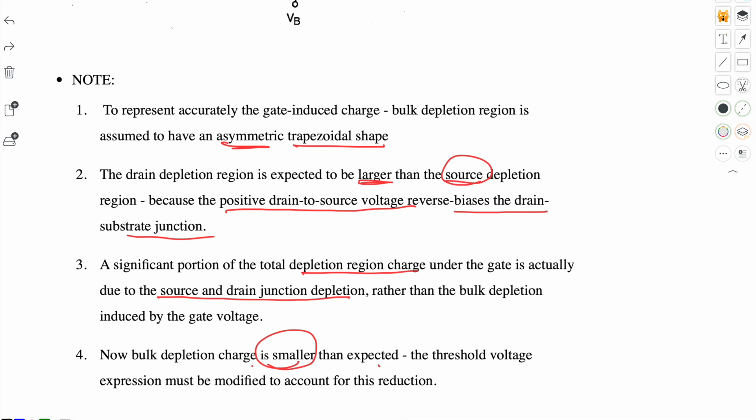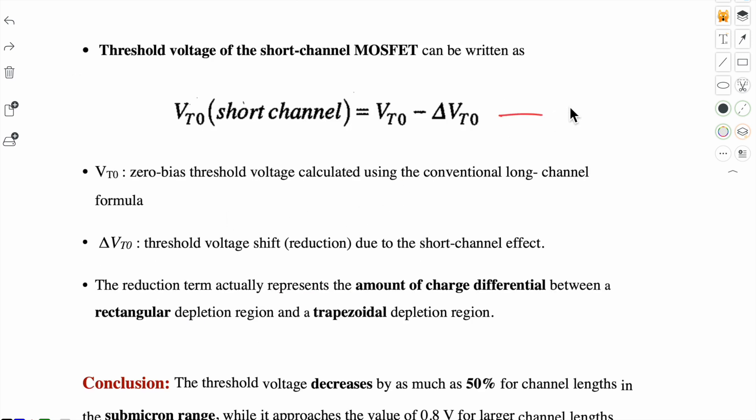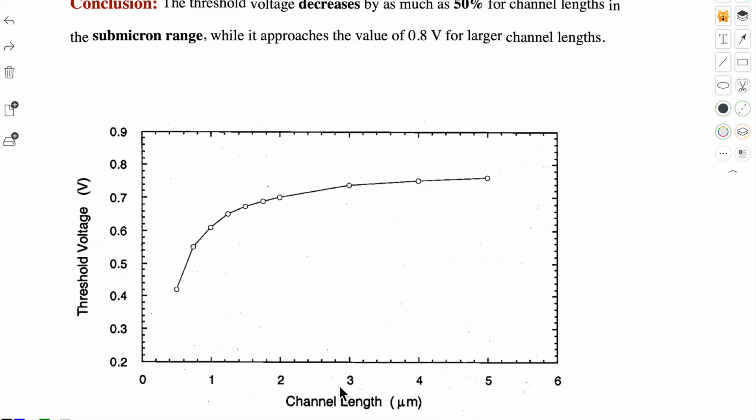So there will be many changes. This is the threshold voltage expression for short channel device. In this expression, V_t0 is the threshold voltage without substrate biasing and ΔV_t0 is the threshold voltage shift or the reduction due to short channel effect. The reduction term actually represents the amount of charge differential between a rectangular depletion region and trapezoidal depletion region. So the main factor is that what you previously assumed to be rectangular is now trapezoidal in short channel because we have also considered the source and drain junction depletion.